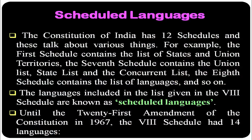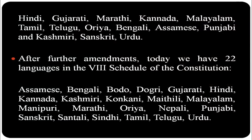Let us talk about scheduled languages. The Constitution of India has 12 schedules covering various things — for example, the First Schedule contains states and union territories, the Seventh Schedule contains union, state, and concurrent lists, and the Eighth Schedule contains the list of languages. Languages included in the Eighth Schedule are known as scheduled languages. Until the 21st amendment of 1967, the Eighth Schedule contained 14 languages: Hindi, Gujarati, Marathi, Kannada, Malayalam, Tamil, Telugu, Odia, Bengali, Assamese, Punjabi, Kashmiri, Sanskrit, and Urdu.